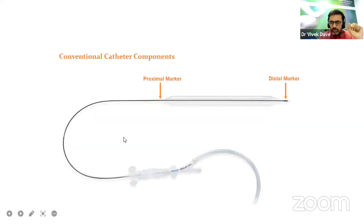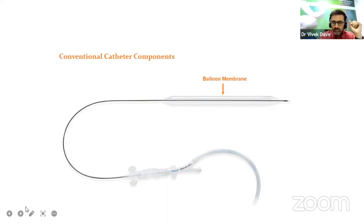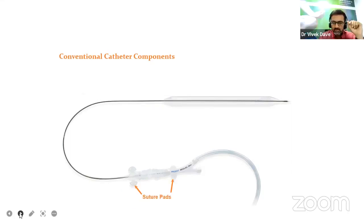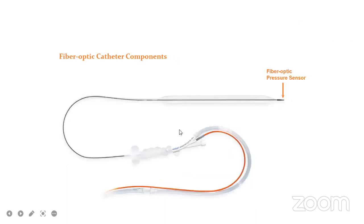These are the components of the conventional catheter. You can see the proximal and distal marker. This entire assembly is the intra-aortic balloon pump. This is the balloon membrane — what we need to inflate and place. This is the gas lumen and inner lumen through which helium gas will travel. This is a universal sheath seal, suture pads, a stat-guard sleeve so the assembly is well guarded, and a Y-fitting with extracorporeal tubing to be connected with the IABP machine. This is the fiber optic pressure sensor.